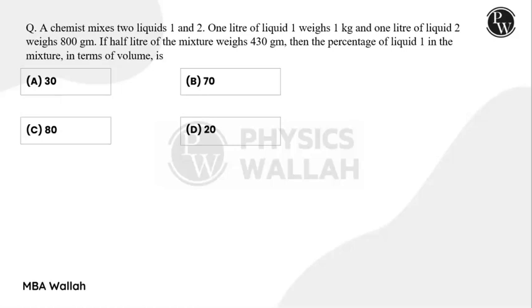Hello, the question is: A chemist mixes two liquids, 1 and 2. One liter of liquid 1 weighs 1 kg, and one liter of liquid 2 weighs 800 grams. If half a liter of the mixture weighs 430 grams, then what is the percentage of liquid 1 in the mixture in terms of volume? We are dealing with grams and kilograms.